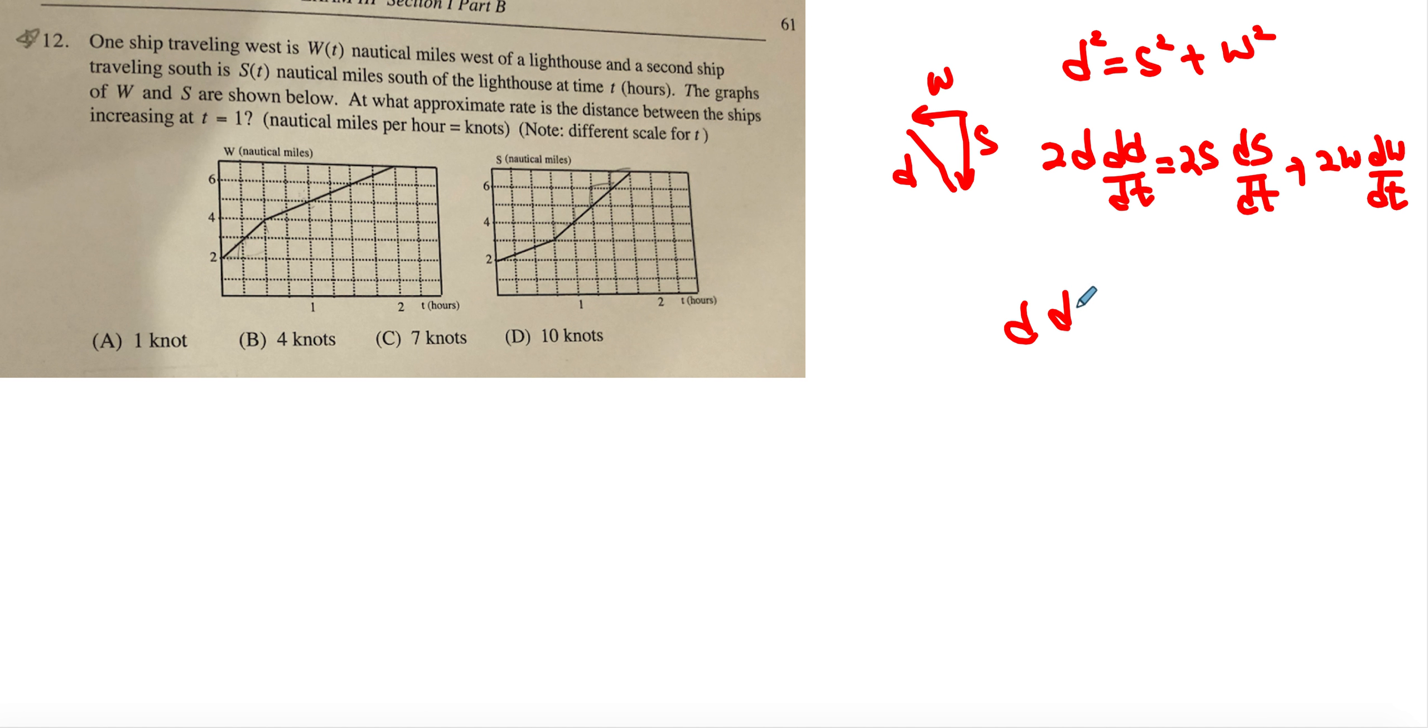Since 2's are common we can divide by 2, so we end up getting d dddt equals s dsdt plus w dwdt.